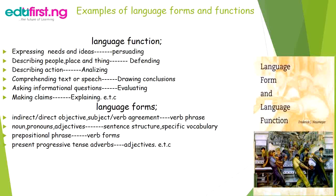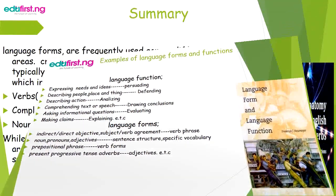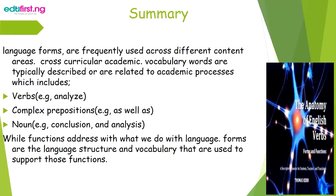Examples of language forms include: indirect to direct speech, subject-verb agreement, verb phrases, pronouns, adjectives, sentence structure, specific vocabulary, prepositional phrases, verb forms such as present progressive tense, and adverbs. Language forms are frequently used across different content areas. Cross-curricular academic vocabulary words include verbs like 'analyze,' complex prepositions like 'as well as,' and nouns like 'conclusion.' While functions address what we do with language, forms are the language structure and vocabulary used to support those functions.